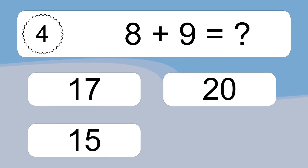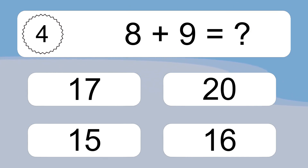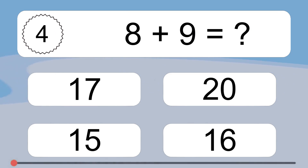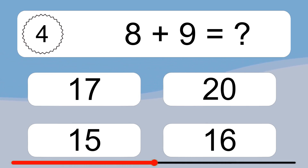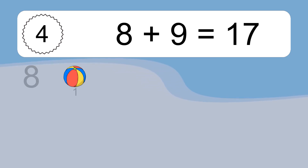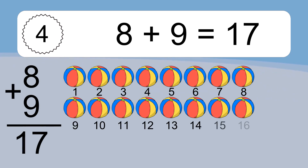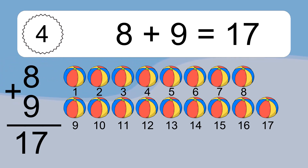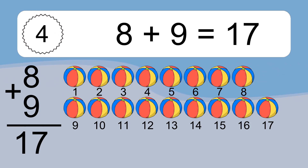8 plus 9 equals what? Let's count it. 1, 2, 3, 4, 5, 6, 7, 8, 9, 10, 11, 12, 13, 14, 15, 16, 17.